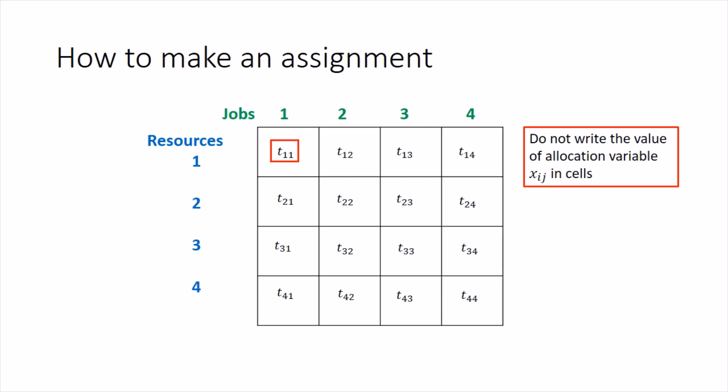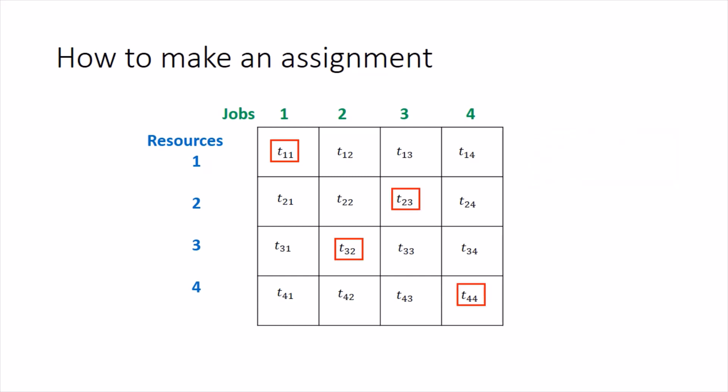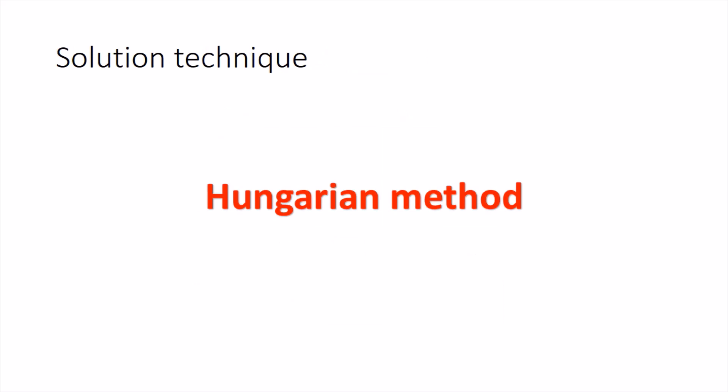Instead of writing ones and zeros in the cells, we use a symbolic representation. We draw a box around the entry inside the cell to denote that this particular job has been assigned to this person. For example, making a box around t_11 means the first job has been assigned to the first person. Making a box around t_23 means the second person has been assigned to the third job. The placement of these boxes is decided by the Hungarian method.